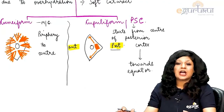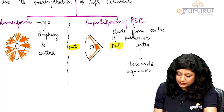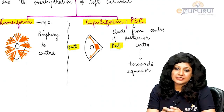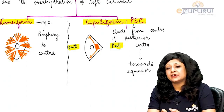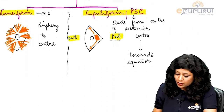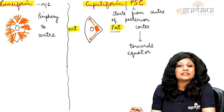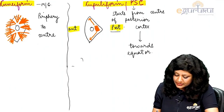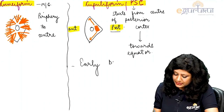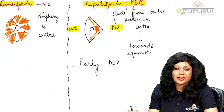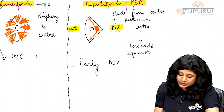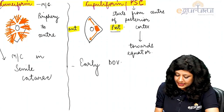There is a sharp contrast between the cuneiform and cupuliform varieties: one goes from periphery towards the center, while the other goes from the center towards the periphery. So which will cause early diminution of vision? Obviously, the one starting from the center — so early diminution of vision occurs in patients with cupuliform cataract. The cuneiform variety is the most common morphology in senile cataract.